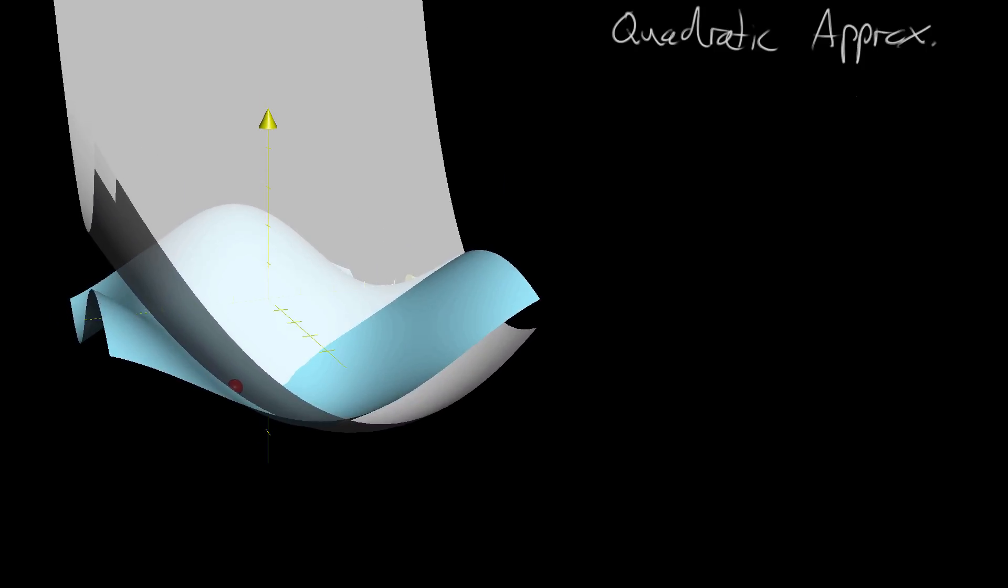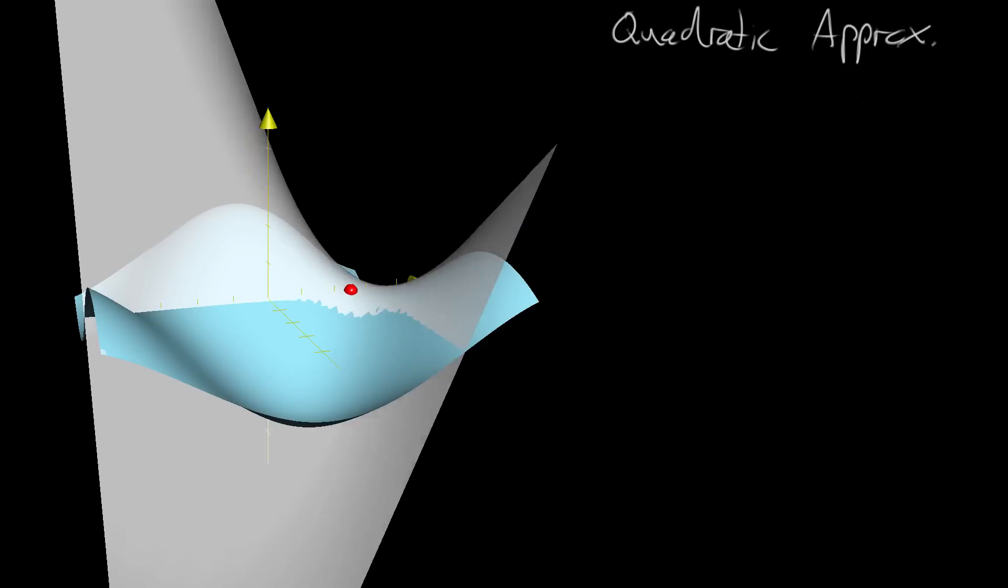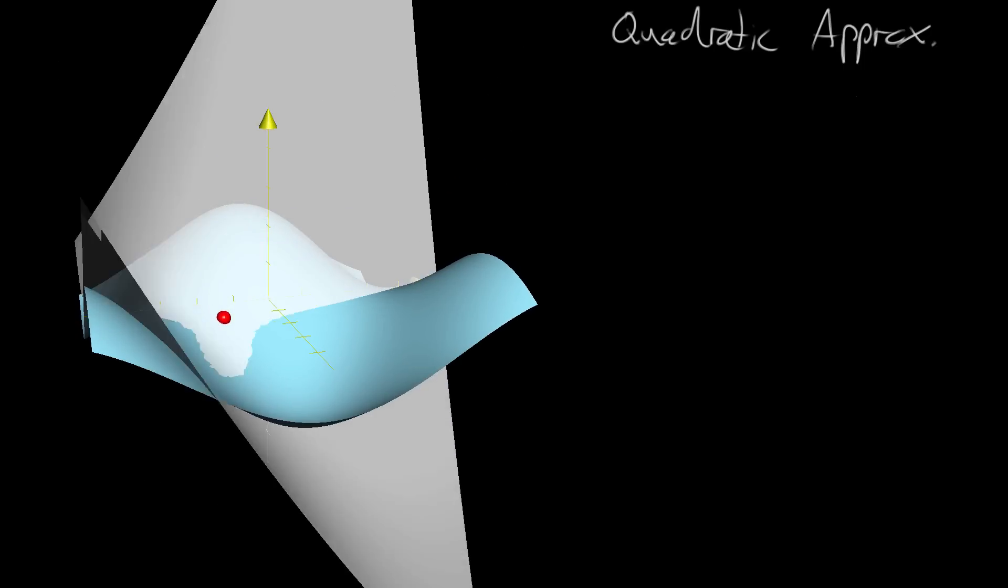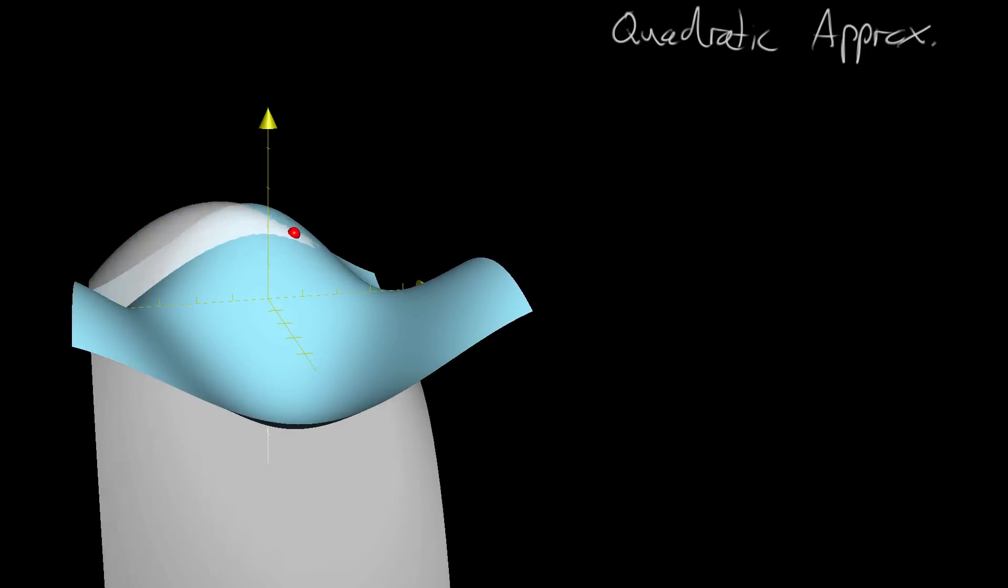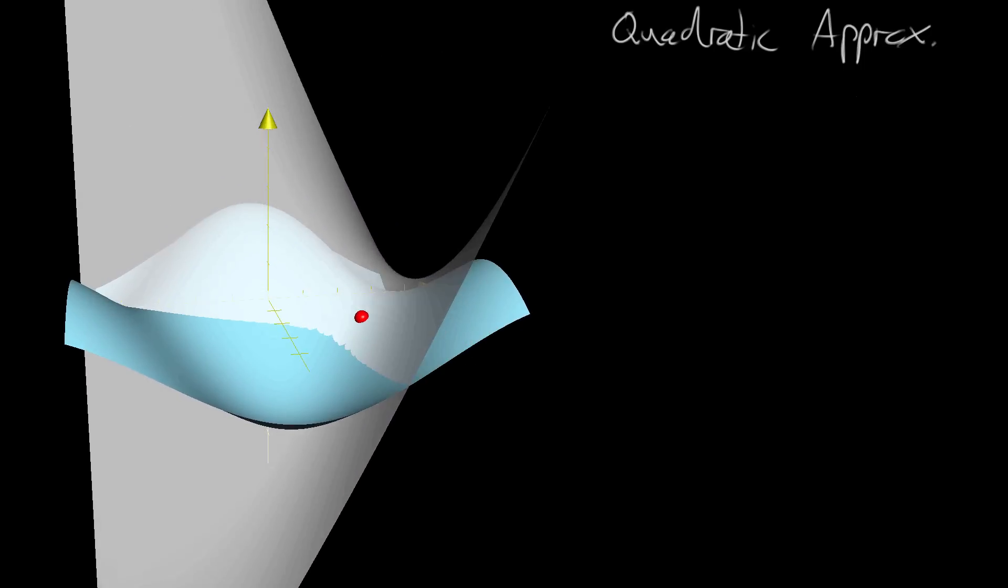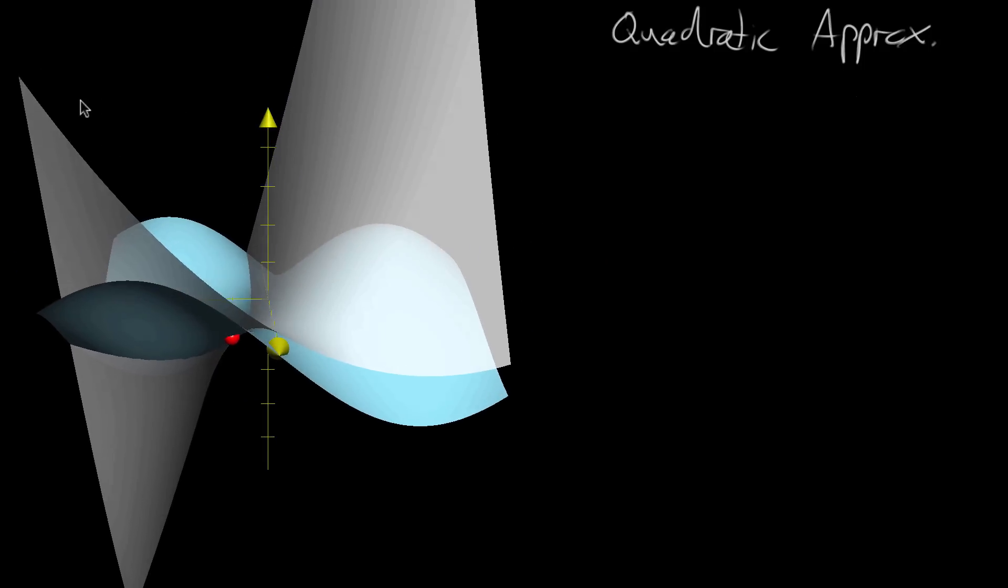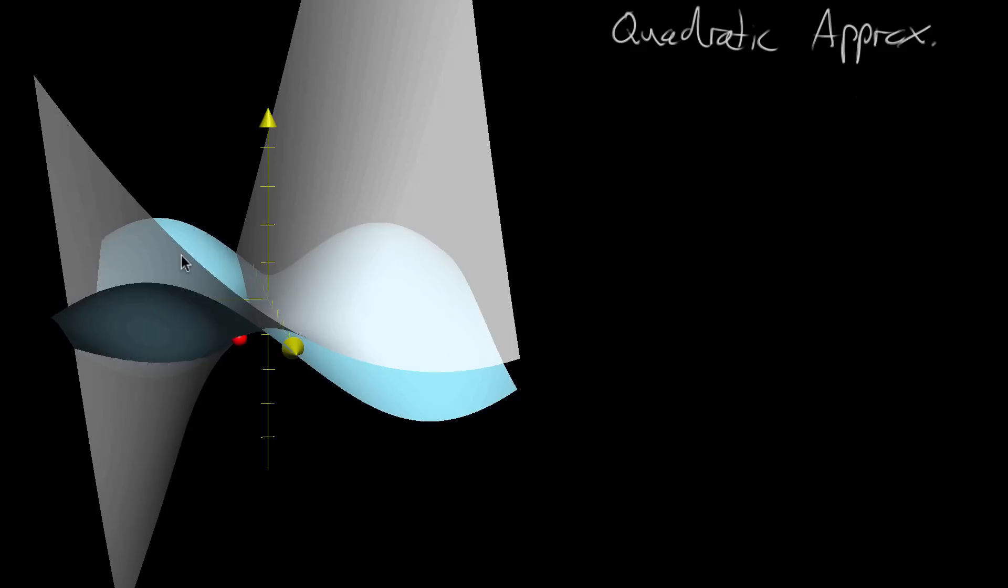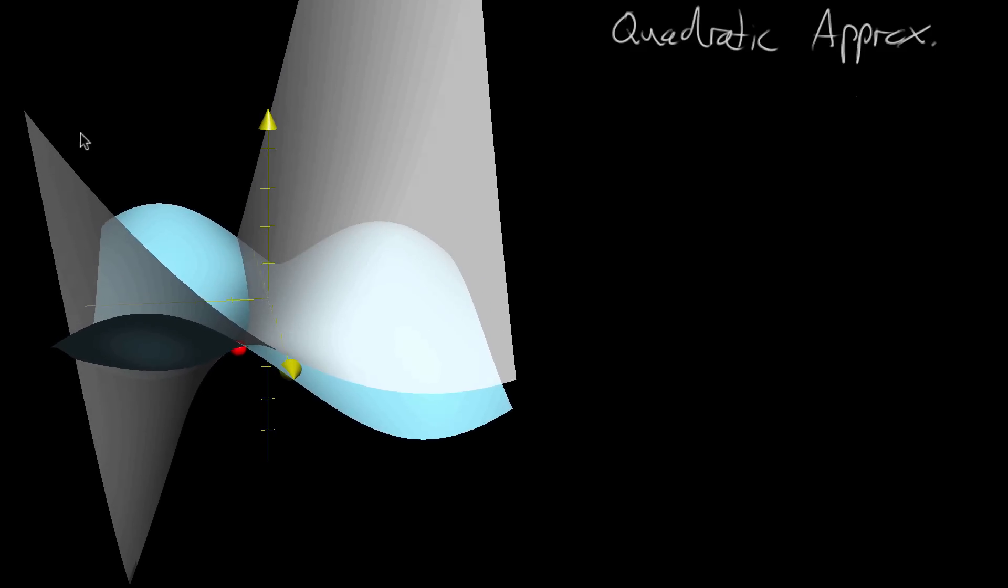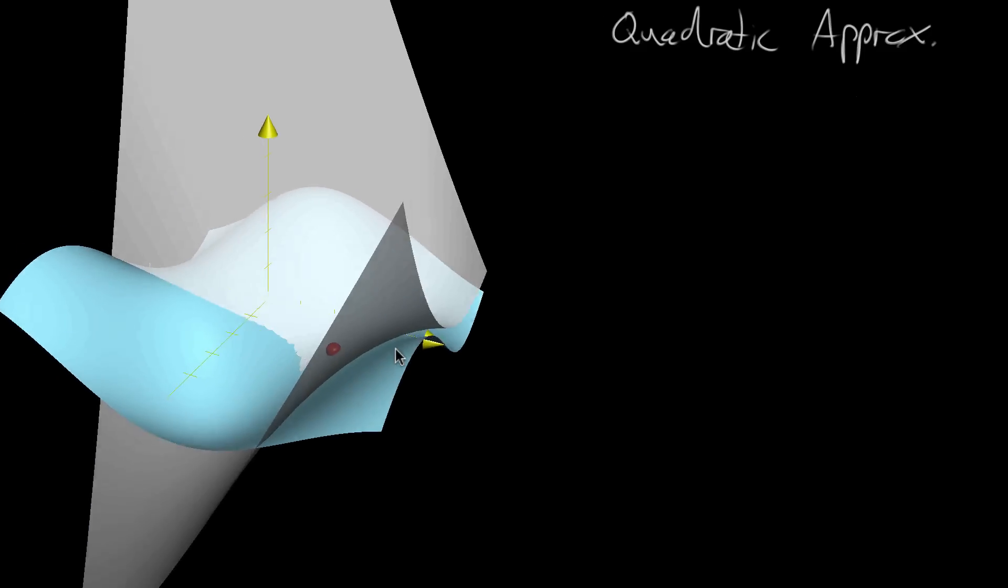And as we move around the point that it's approximating near, the way that it hugs it can look pretty different. And if you want to think graphically what a quadratic approximation is, you can basically say if you slice this surface, this kind of ghostly white surface in any direction, it'll look like a parabola of some kind.